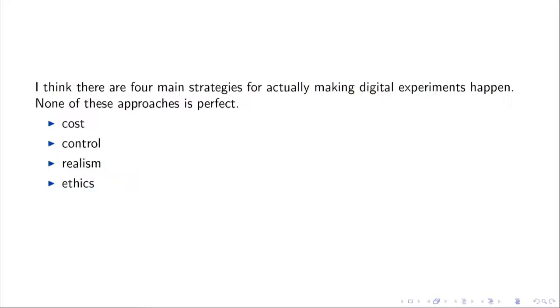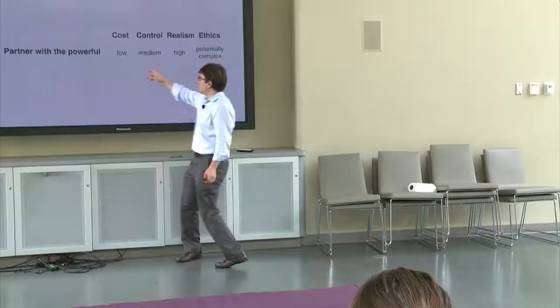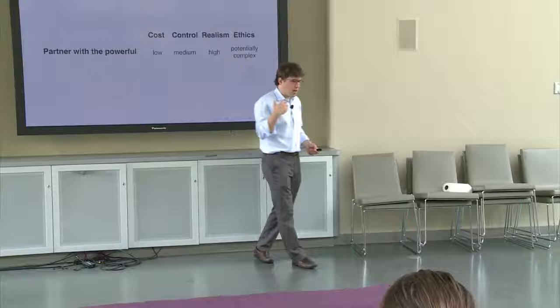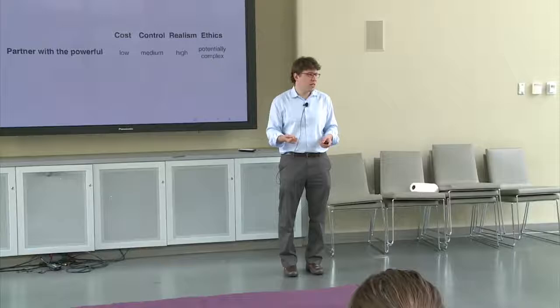The first main strategy is what I like to call partnering with the powerful. So this would be trying to partner with a company, it could also be an NGO, a government, a political campaign. So in all of these things, these are people or organizations who are out in the world trying to do stuff, and they often are already running experiments, or could potentially benefit from running experiments. And so if you can partner with them, you can potentially do the experiment that you want. Generally, these have low costs in the sense that the partner often bears a lot of the cost, but these are not free for you, because there is often a large cost in you forming this partnership. Often the partnerships don't work successfully, so there's a lot of false starts as well.